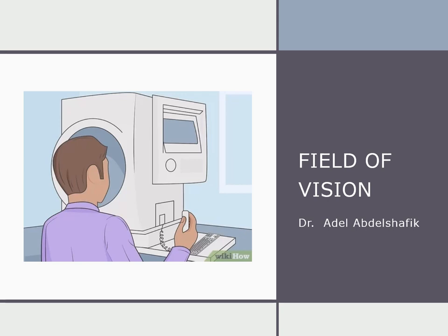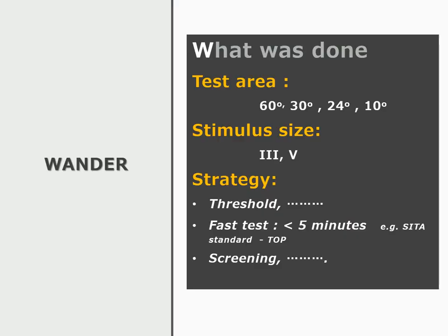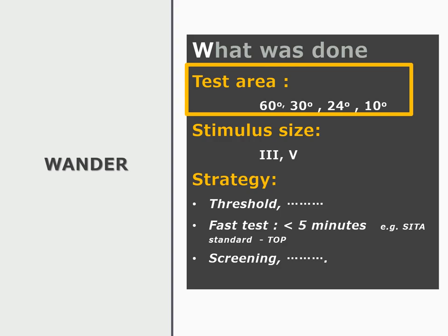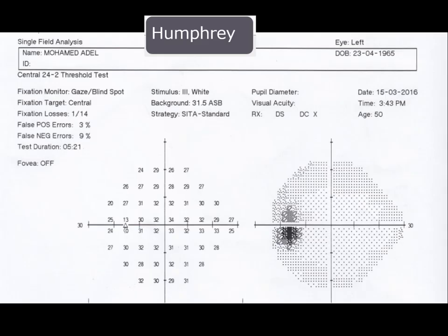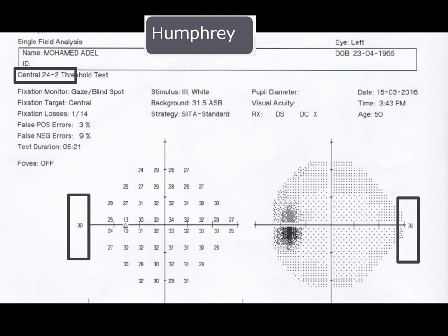This is an updated version of the lecture on visual field testing. This includes area tested, stimulus size, and strategy. In this example, you can see that the test is 24 degrees and the strategy is SITA Standard.